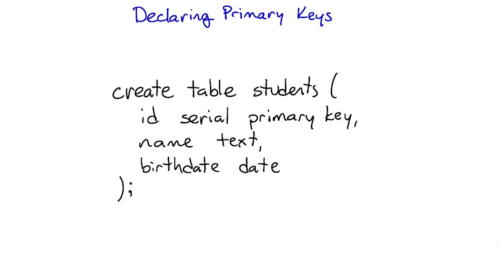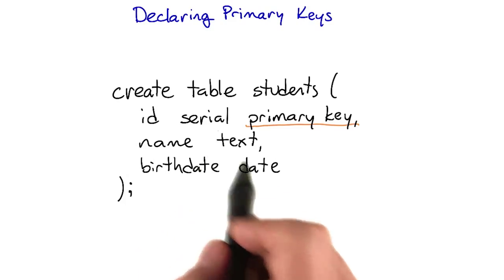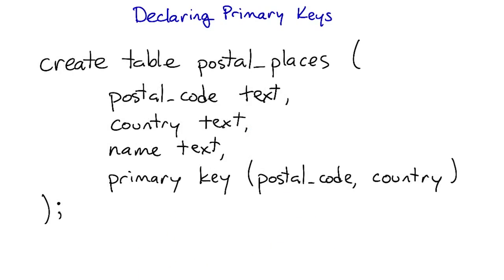If you have a single column primary key, just put primary key after the column's type when you create the table. Whereas if you have a multi-column primary key, you put it after all the columns in the table.